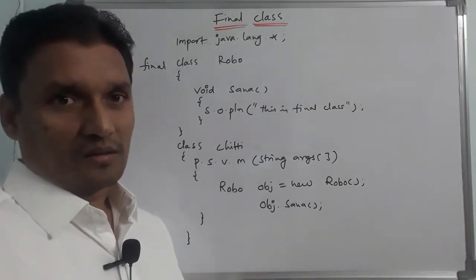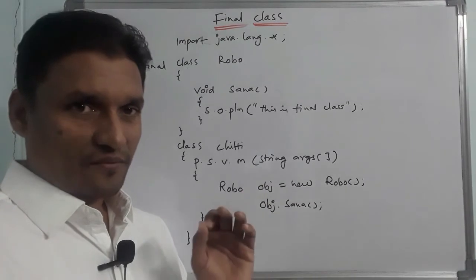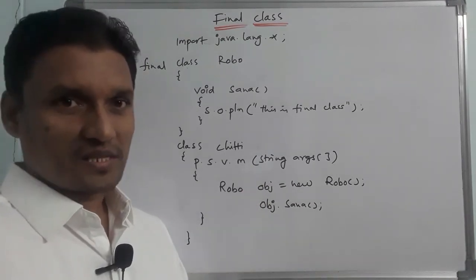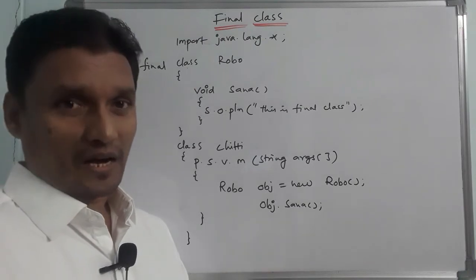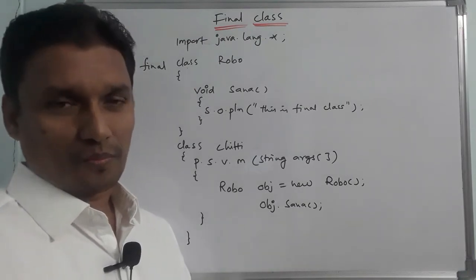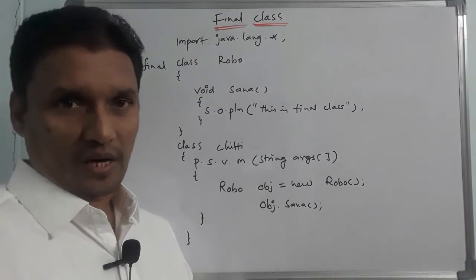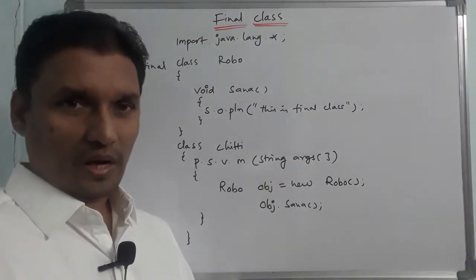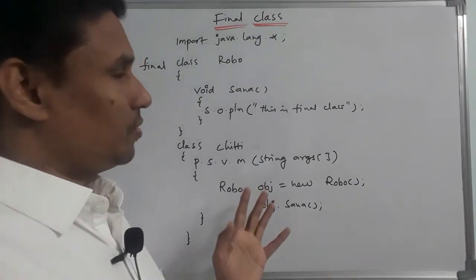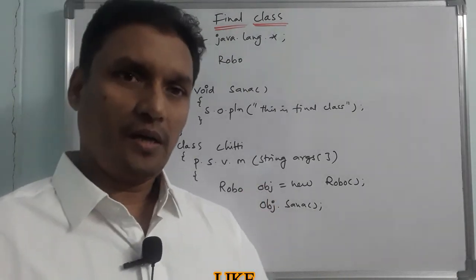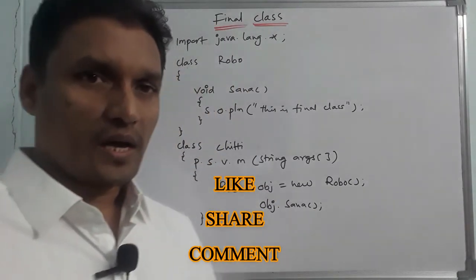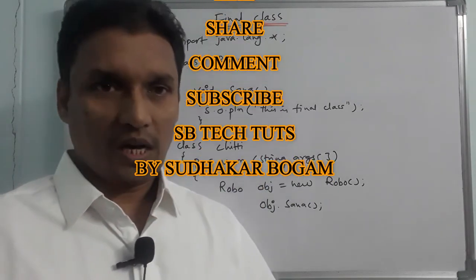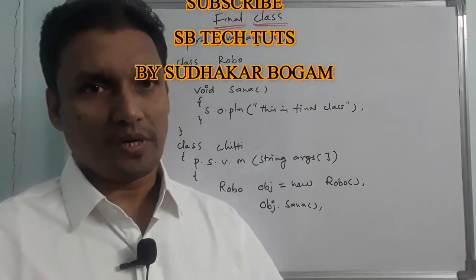Simple. A class declared as a final it cannot be extended means it cannot be inherited in the class and it will be fixed. So in the next video, please like, share and subscribe. Thank you.